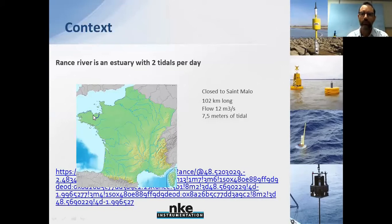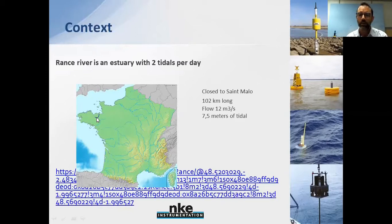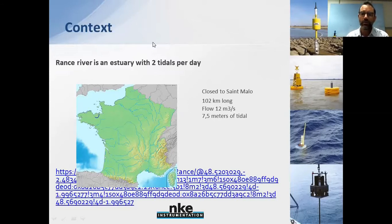Not far from Mont Saint-Michel, the river is more than 100 kilometers long. The flow of this river is an important specification for building a dam — the flow of the Rance River is around 12 cubic meters per second. The tidal range is also significant, with an average tide of around 7.5 meters every day.